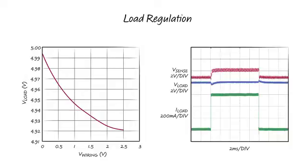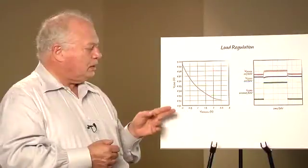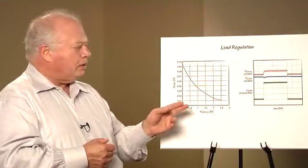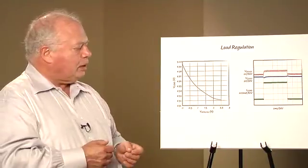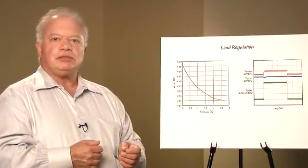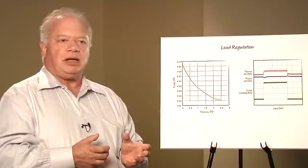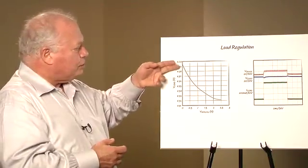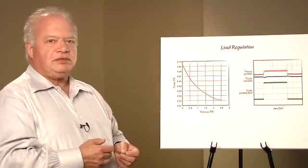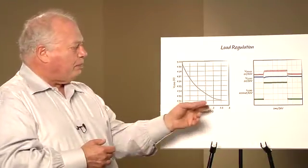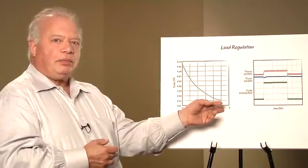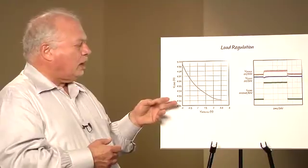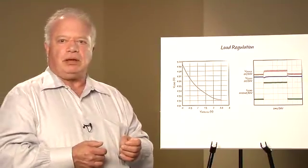This is the output of a power supply that is nominally set to 5 volts. This is the voltage drop to the load here. It can go up to 2 and a half volts. So that's 50 percent of my power supply output. Here's the voltage that my load sees. The voltage change my load sees as my output, my line drop goes up to 2 and a half volts. I only lose 80 millivolts at my load.